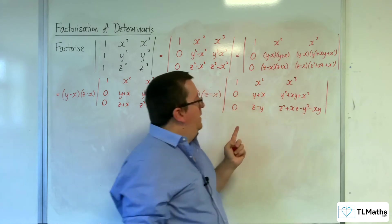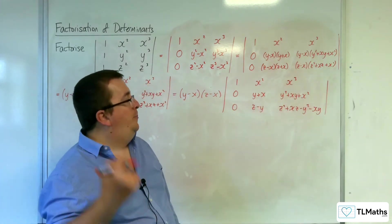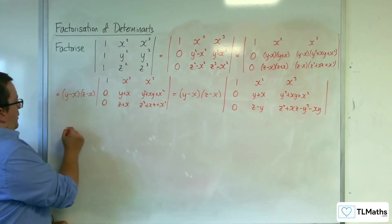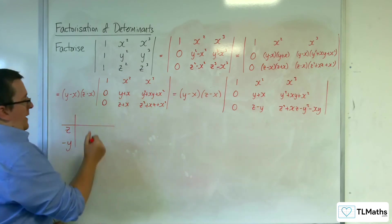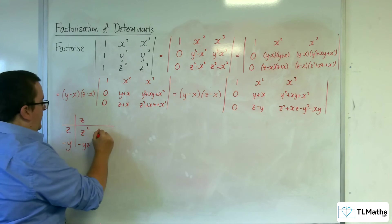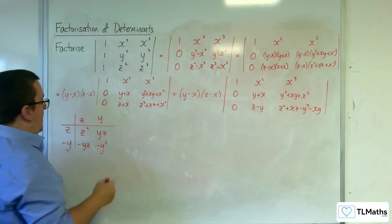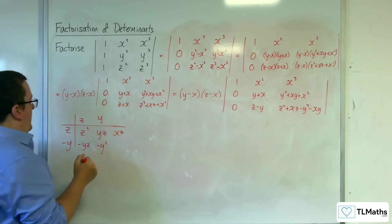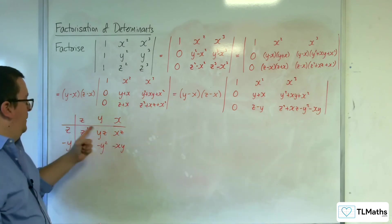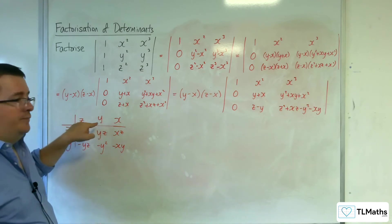Now, (z − y) could be a factor of z² + xz − y² − xy. A little more polynomial division: dividing by (z − y) gives z + y + x. So z² + xz − y² − xy = (z − y)(x + y + z).